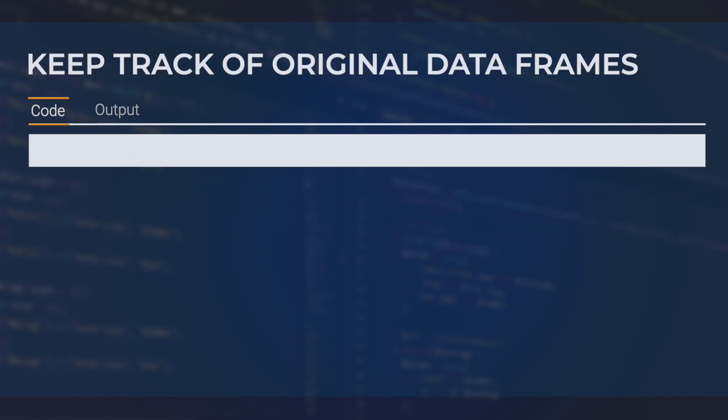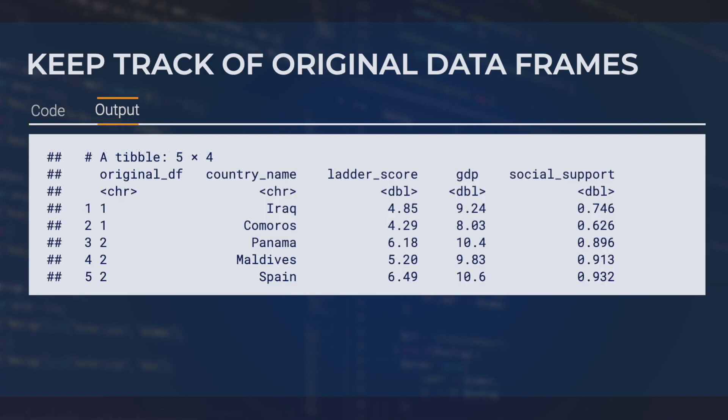If you would like the resulting data frame to have a record of which row came from which original data frame, then you can set the .id parameter to equal some name, like originalDF in this case. We see that this produces a data frame whose first column is originalDF, and contains a 1 if that row came from the first data frame, and a 2 if it came from the second one.